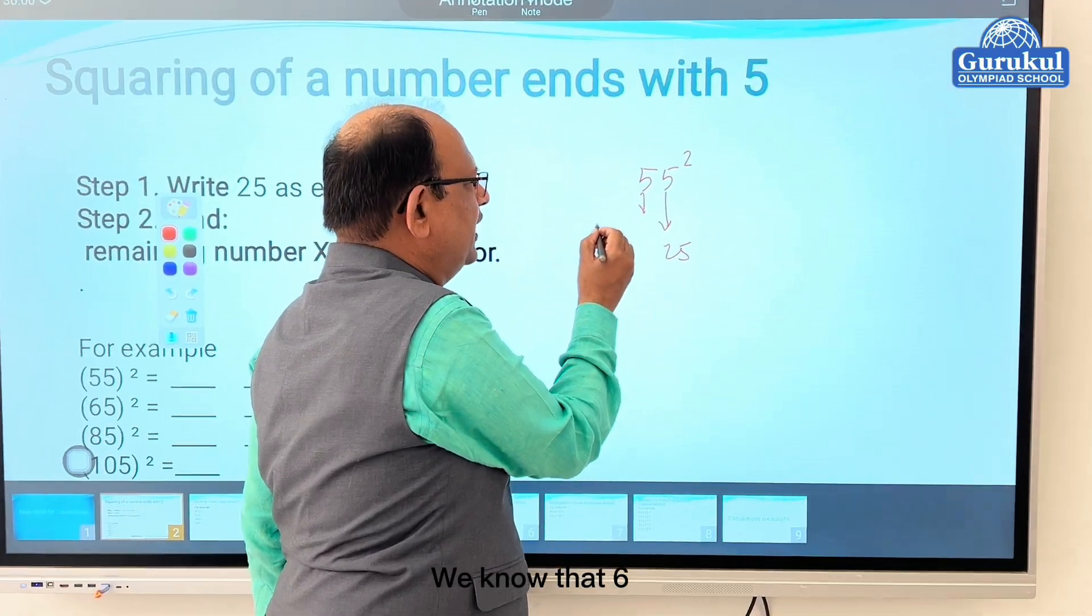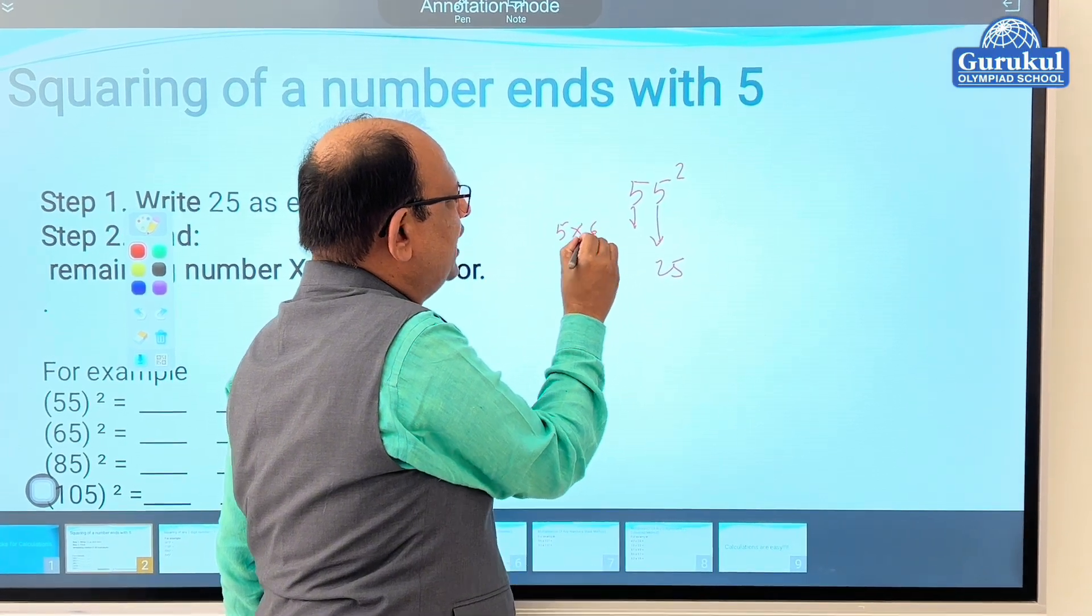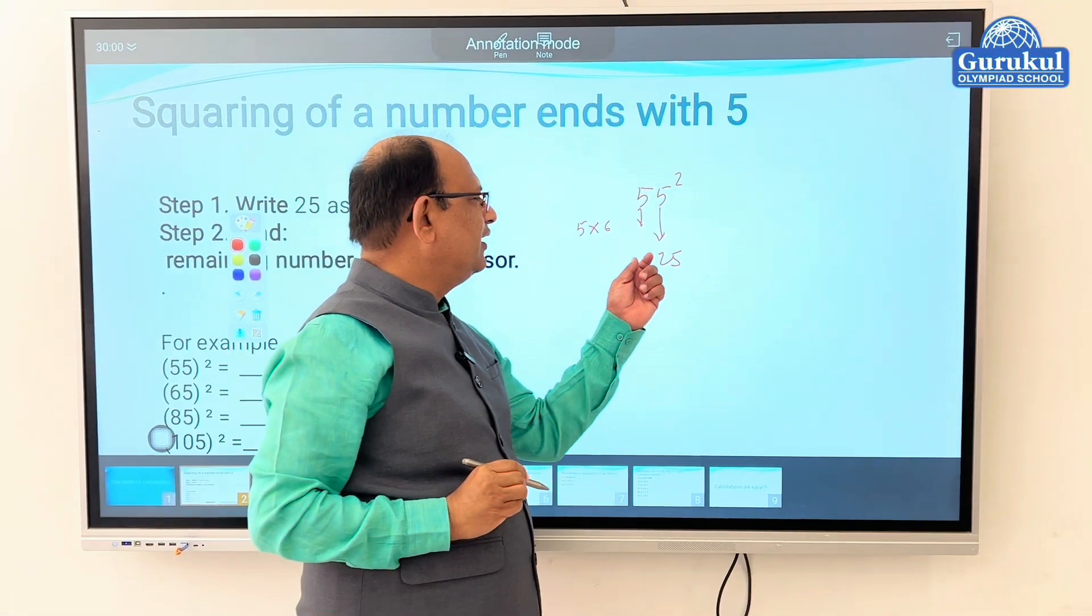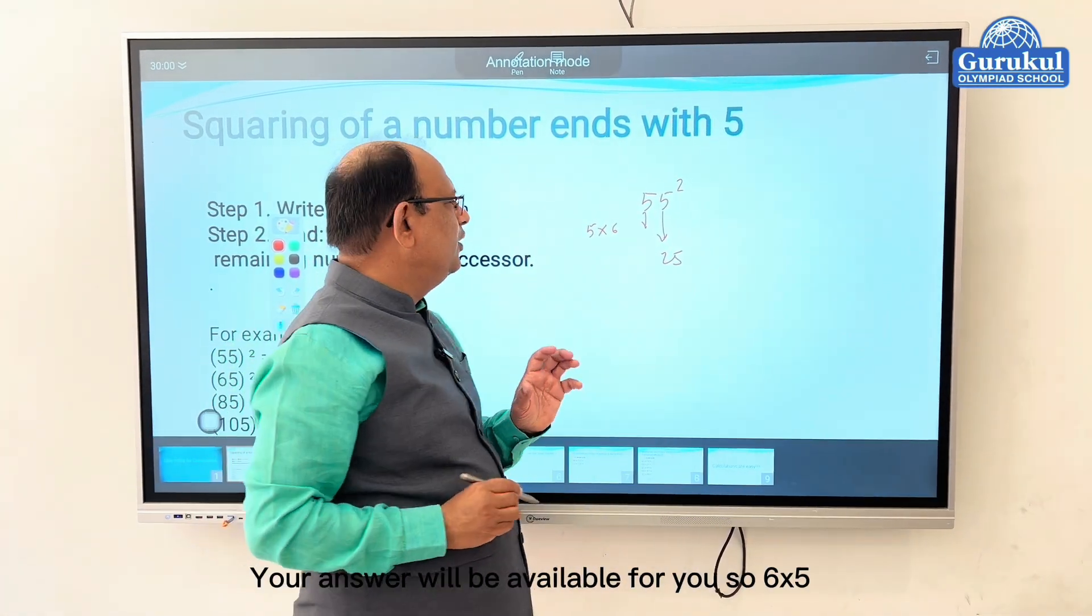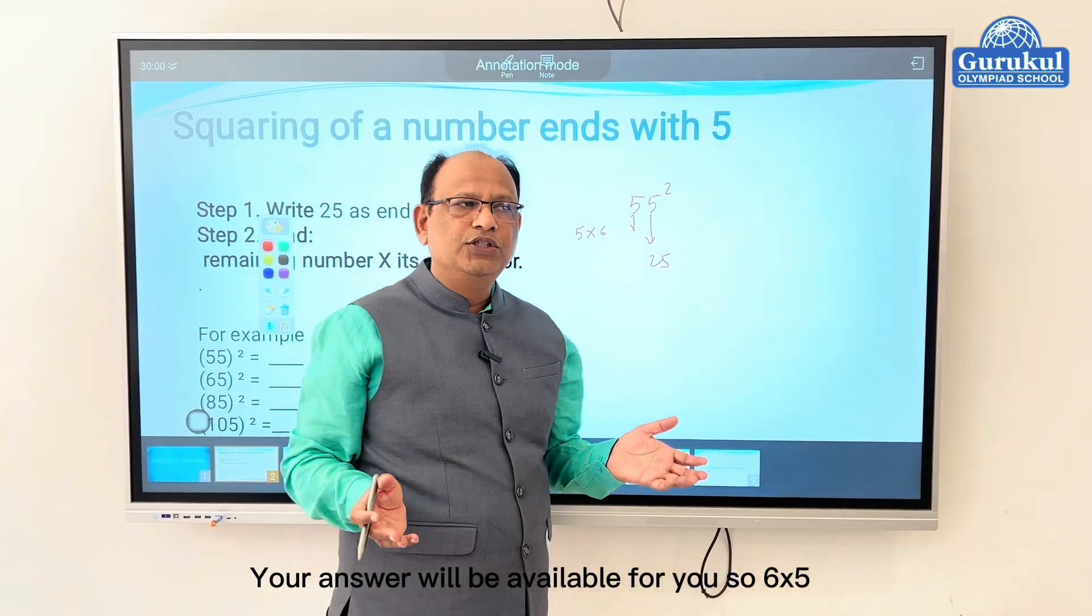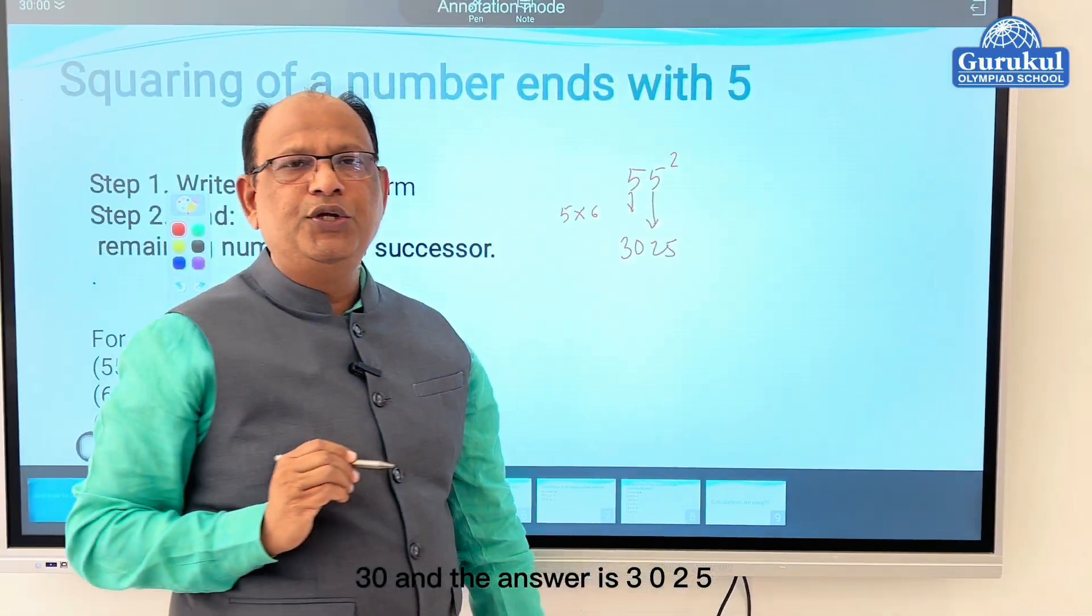This digit, you take the next number. Here it is five, so what comes after five? We know that six. So this five into six, you just do this calculation and write it here. So six times five, we know that's thirty, and thus the answer is 3025.